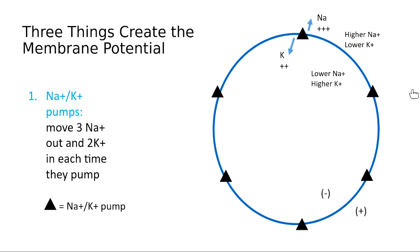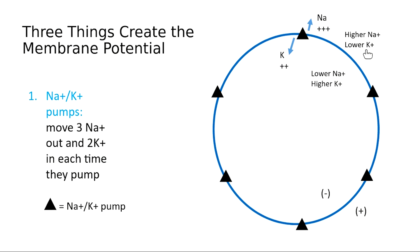As these sodium-potassium pumps continuously pump sodium out and potassium in, they establish a concentration gradient on the two sides of the membrane. Sodium ends up at a higher concentration outside the cell and lower concentration inside, while potassium is at a higher concentration inside the cell and lower concentration outside.